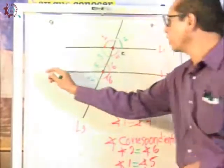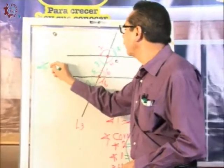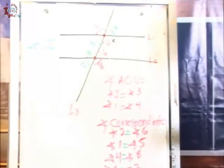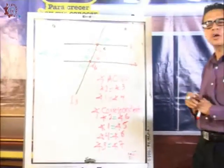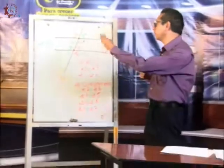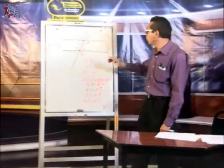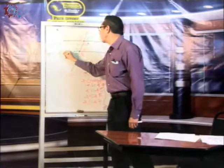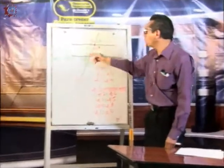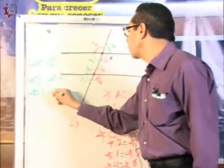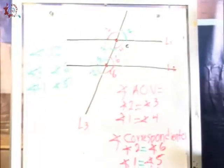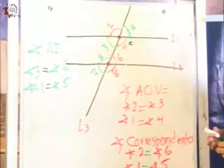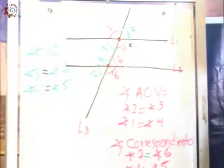Siguen los ángulos alternos internos. Los ángulos alternos internos, como su nombre lo dice, están adentro de las paralelas, y se encuentra uno a un lado y el otro al otro lado — uno a la izquierda y el otro a la derecha — además se cruzan. Por ejemplo, el ángulo tres con el ángulo seis, y el ángulo cuatro con el ángulo cinco son ángulos alternos internos. También tienen la misma característica: son iguales, miden lo mismo. Es necesario que comprendas cada uno de ellos para poder realizar las actividades correspondientes.